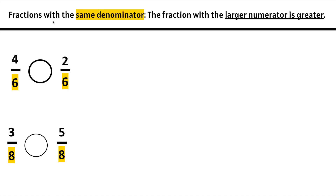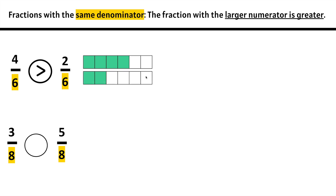Let's practice. Fractions with the same denominator: this fraction has a denominator of 6, and this fraction has a denominator of 6. The fraction with the larger numerator is greater. 4 is greater than 2, so 4/6 is greater than 2/6. Let's take a look at a model: 1, 2, 3, 4, 5, 6 equal parts of a whole, and we have 1, 2, 3, 4 of them. 6 equal parts of a whole, and we have 1, 2 of them. We can see that 4/6 is greater than 2/6.